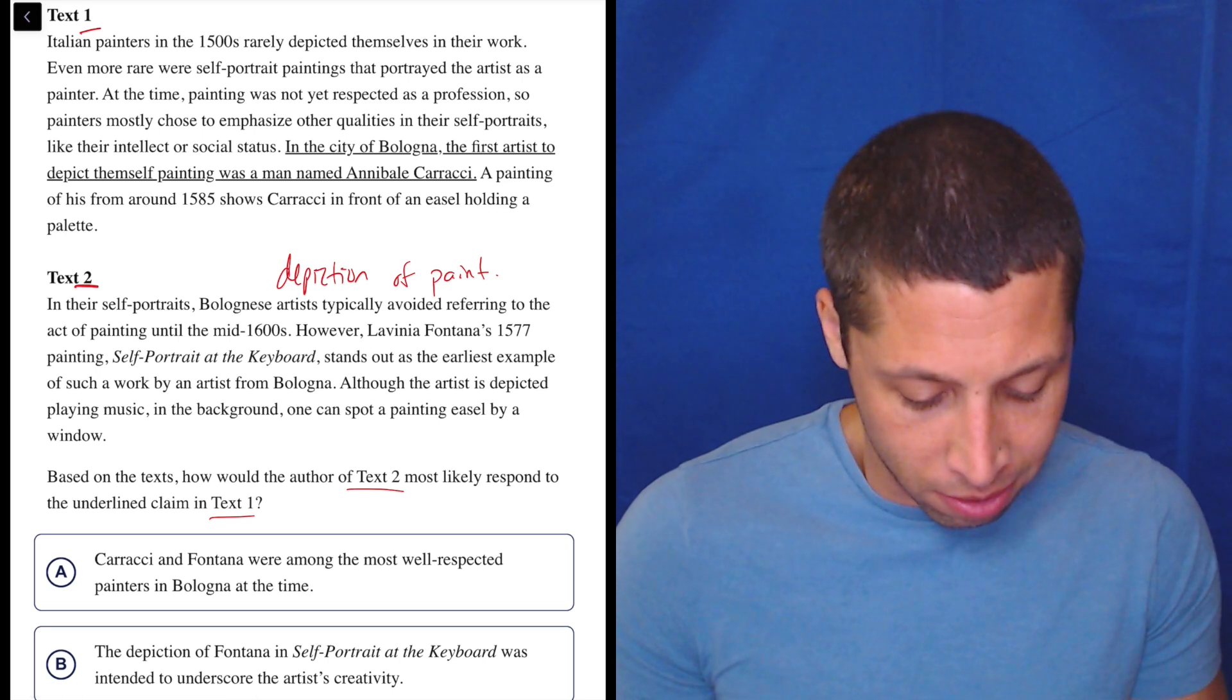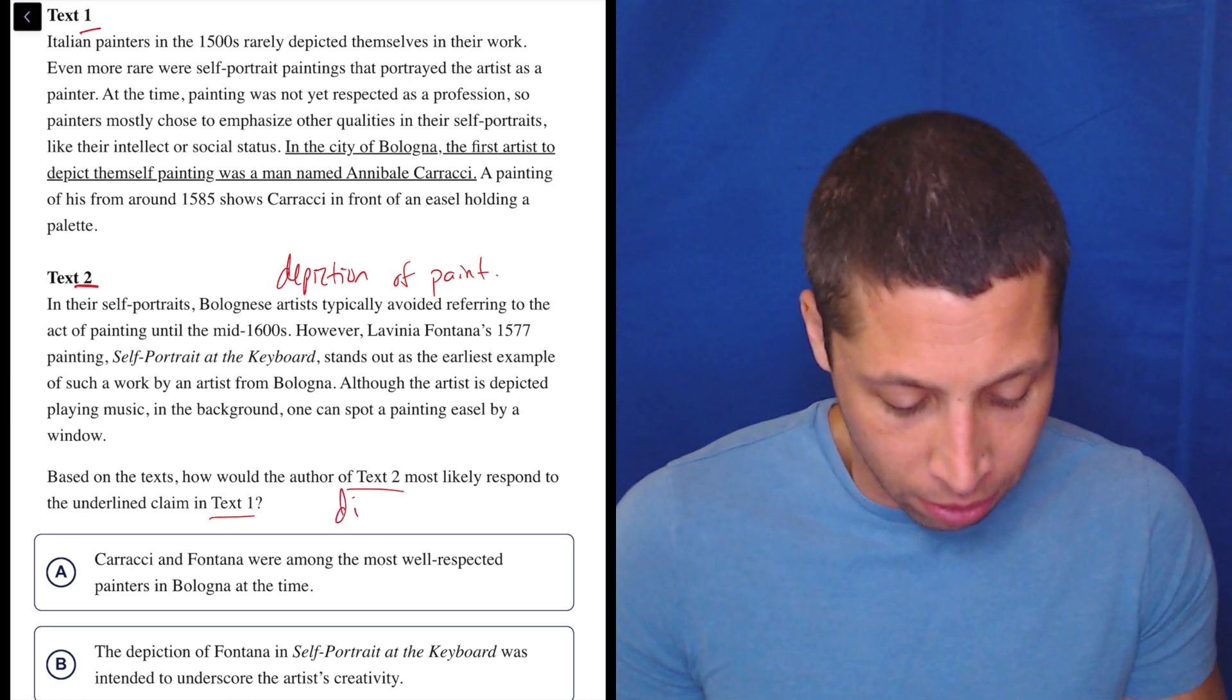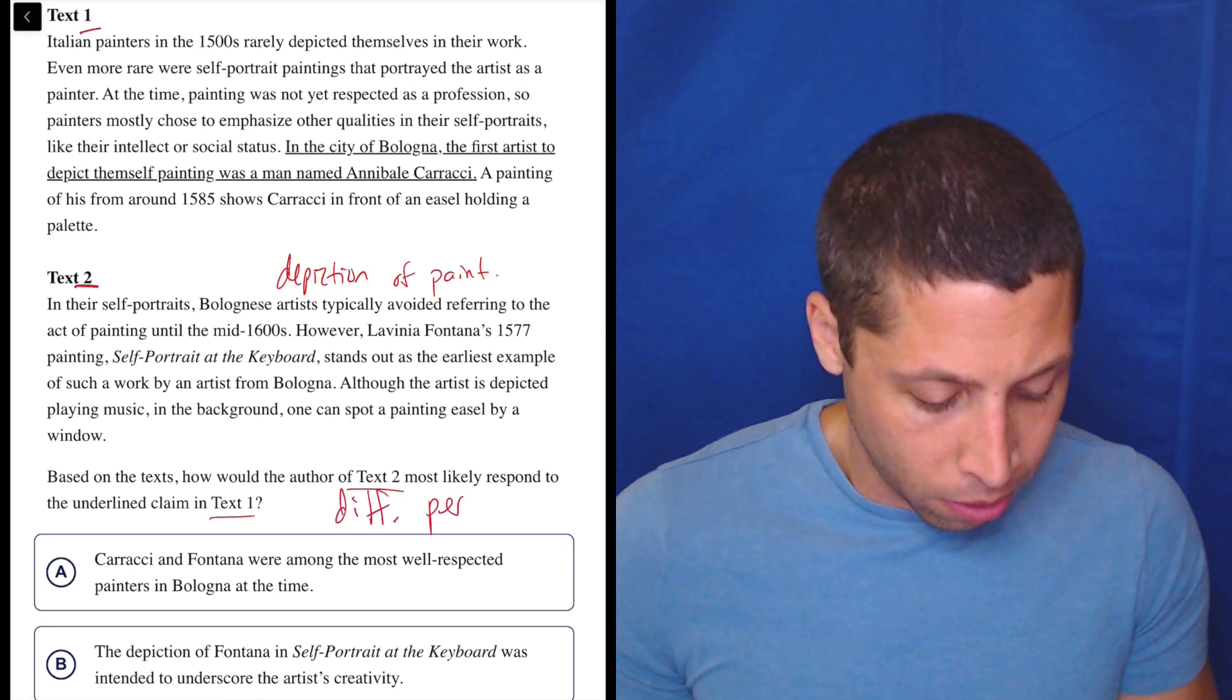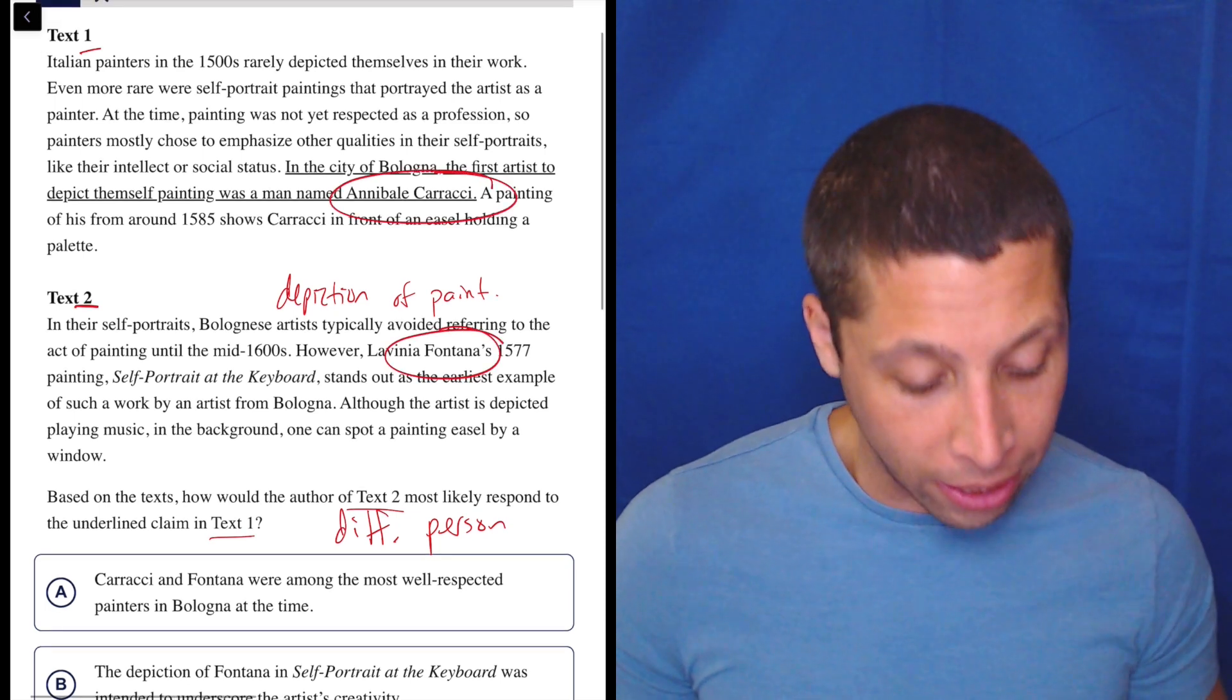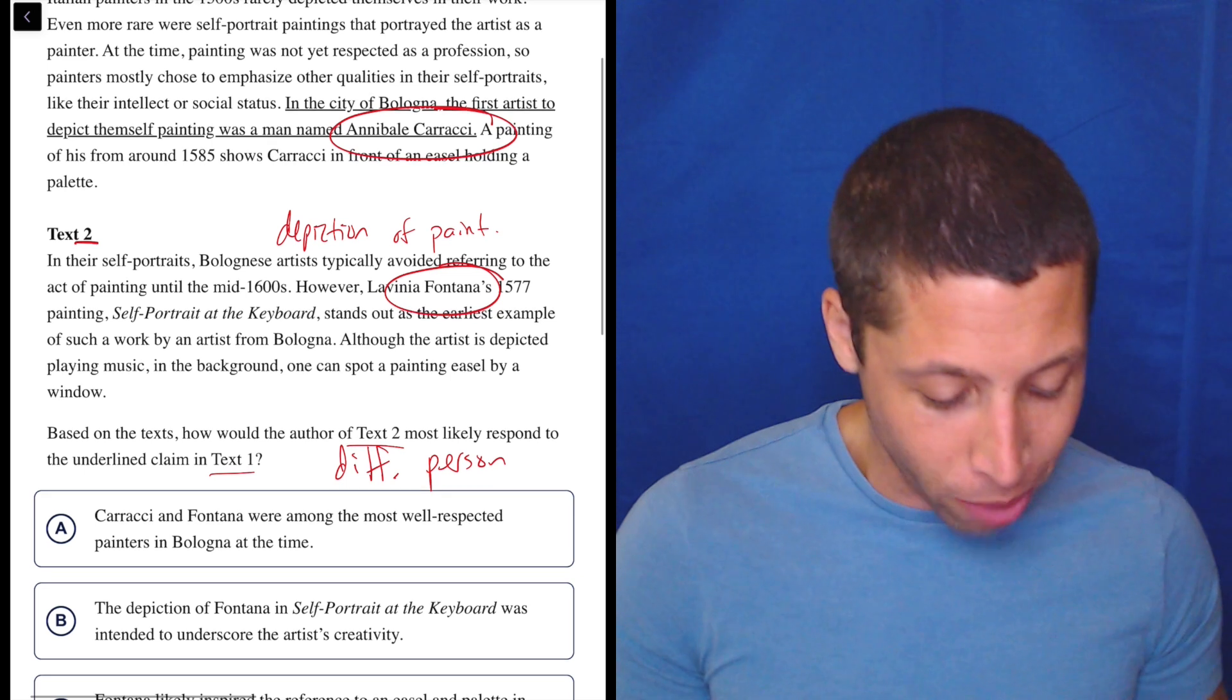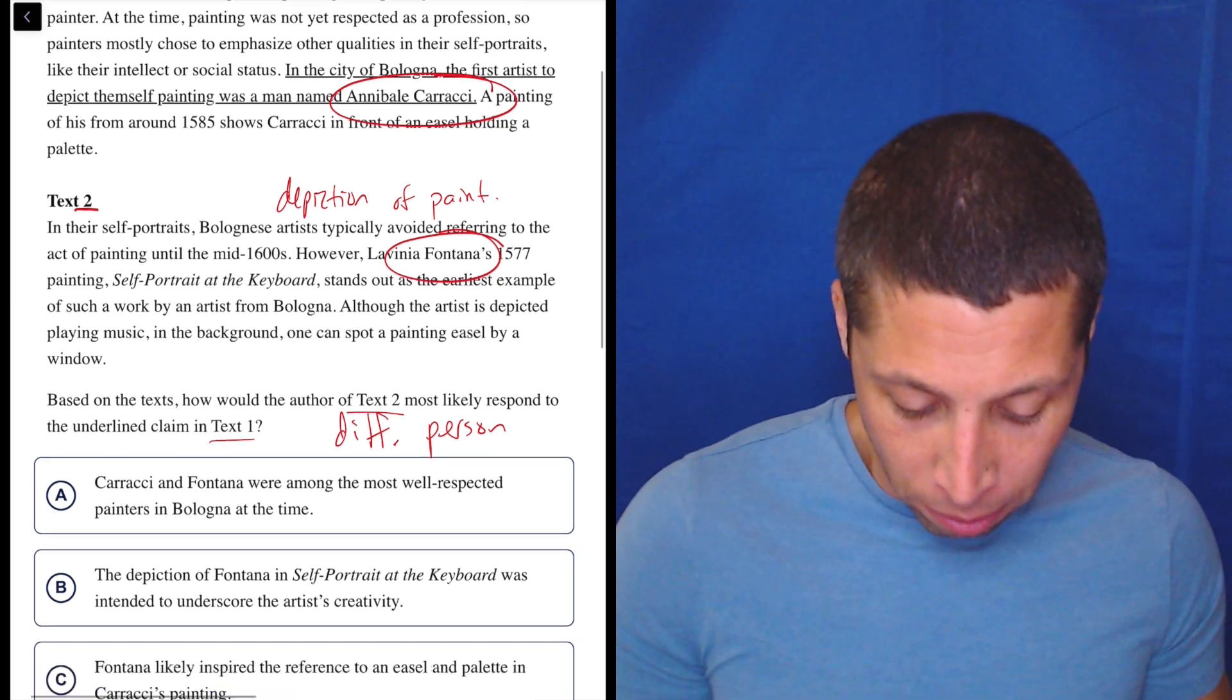What is the difference? It's a different person. Yeah, different person. They both think someone else is the first one. This one is Lavinia Fontana. This one is Anabale Karachi. I have no idea if I'm pronouncing those names right. I don't care. So how would they respond? Let's see.